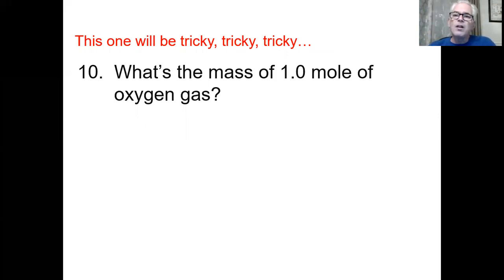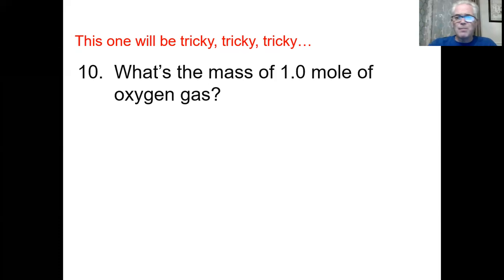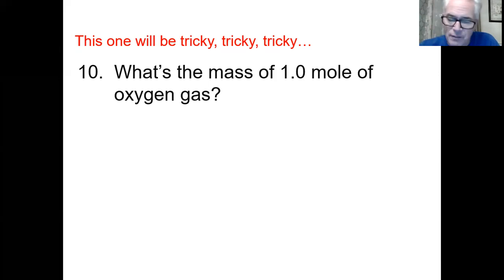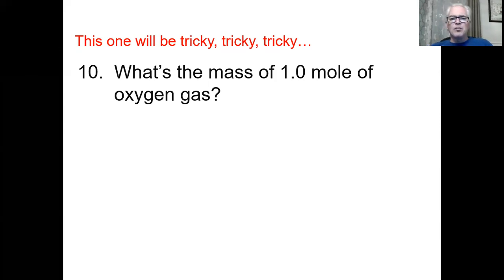The mass of a mole of oxygen gas — now, I'm telling you, it's tricky. Write something down in pencil because you're probably going to get it wrong. How much is the mass of a mole of oxygen gas? Put your finger in the box — O for oxygen — 15.999, rounds to 16. One atom weighs 16 AMUs. So you might say one mole of oxygen weighs 16 grams. No, no, no.